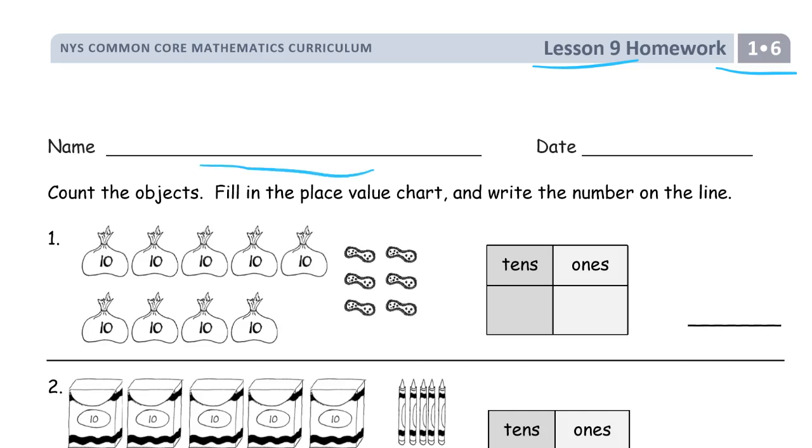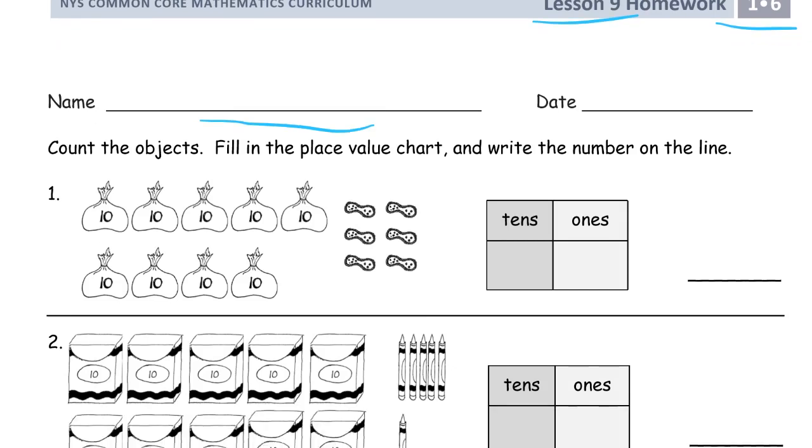Counting the objects, we're working with groups of ten and ones, but this time we're working with pictures of them. We're later on drawing quick tens with larger numbers and place value charts. Count the objects, fill in the place value chart, and write the number on the line.